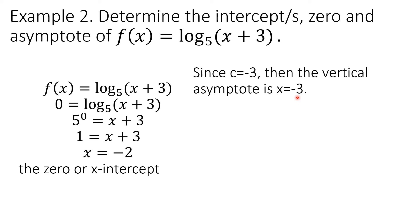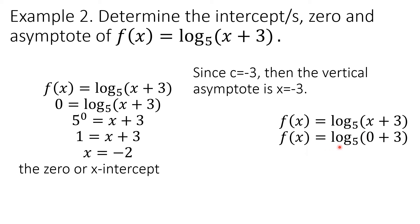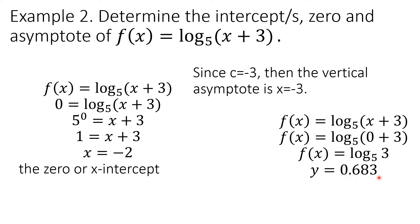Next, let us solve for the y-intercept. Because the graph passes through the y-axis, there must be a y-intercept. This time we substitute 0 to x, giving f(x) = log₅(0 + 3) = log₅(3). Using a calculator, the value of log₅(3), rounded to three decimal places, is approximately 0.683. That value of y is the y-intercept.